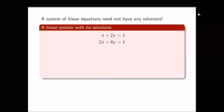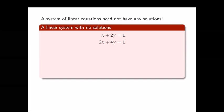We saw that the previous system had at least one solution. But sometimes it's impossible to find a solution — there are systems of linear equations that may not have any solutions at all. For example, the system shown on the screen.